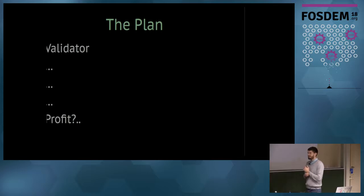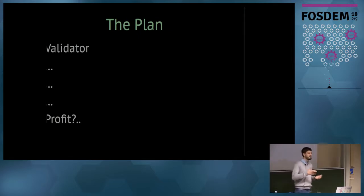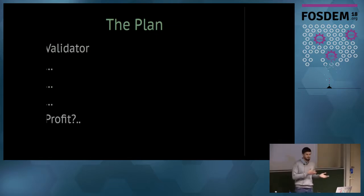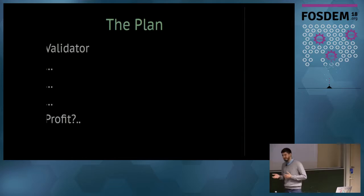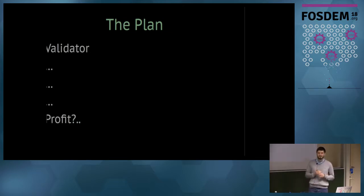I needed to write a validator. A validator is a website that is regularly updated, downloads OpenStreetMap data, and checks it for correctness. We have a lot of validators in OpenStreetMap — for administrative borders, for places like cities and towns, for roads, for everything. I needed to make a validator that checks that subways are mapped correctly.